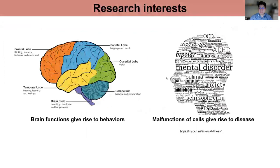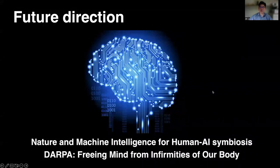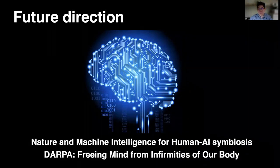My lab at Harvard is interested in how neuron functions give rise to behavior, or how the malfunction of those neurons gives rise to disease. Specifically, we want to build high-performance brain-machine interfaces to collect neural activity to control external robotics or neuroprosthetics, or apply them as bioelectronic therapeutics to ameliorate neurological disorders such as Alzheimer's or Parkinson's disease. In the future, we envision that the brain-machine interface could be the enabling technology that allows natural and machine intelligence integration, potentially freeing the mind from our biological body.